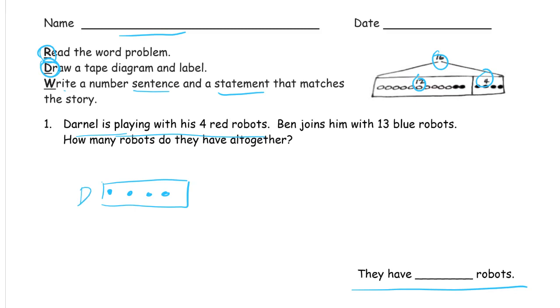And Ben joins in with 13, so that's 1, 2, 3, 4, 5, 6, 7, 8, 9, 10, 11, 12, 13. So we have a 10 group, so now this piece of tape is 13, and that's Ben's.